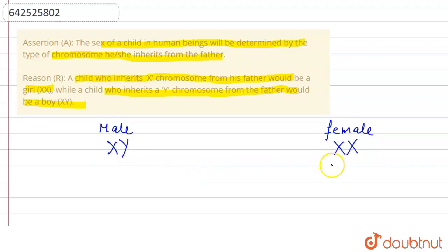Because the female is having the XX, she is homozygous here. So this makes the assertion statement true that the sex of the child in human beings will be determined by the type of chromosome he or she inherit from the father. Now what happens is if the male is giving the X.